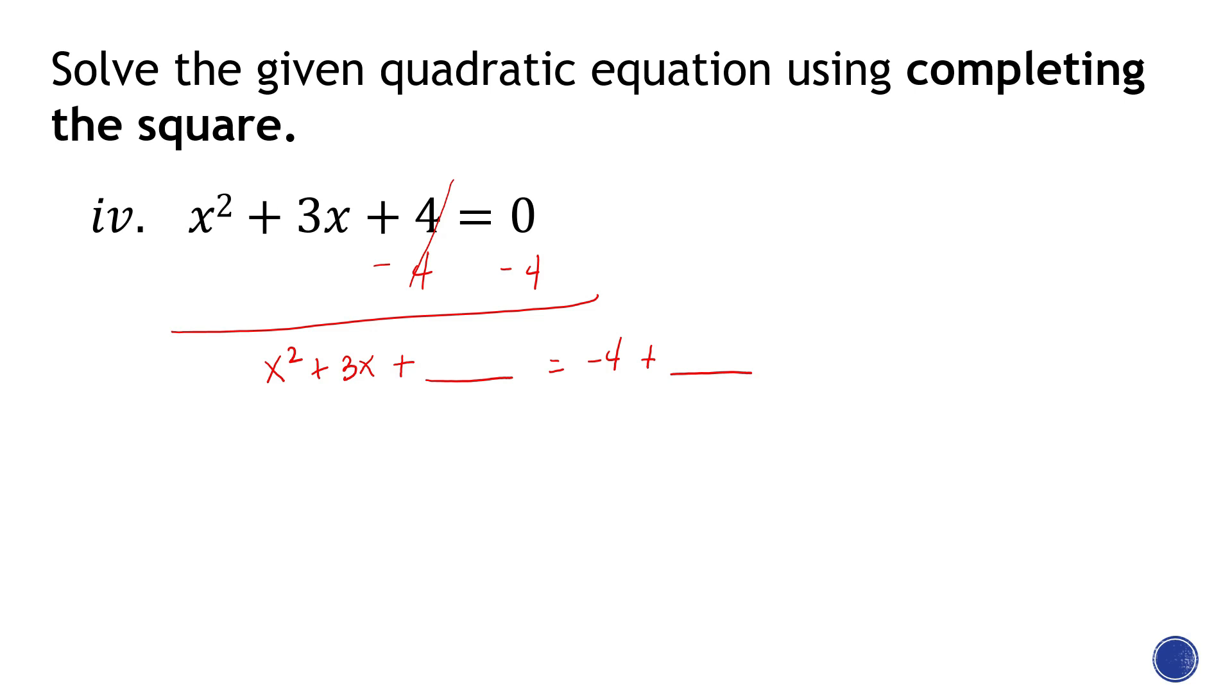Next, divide this by 2, and then square. So that's 9/4. Alright, that's 9/4. Okay, so express this as a binomial. So this is equal to (x + 3/2)² equals.